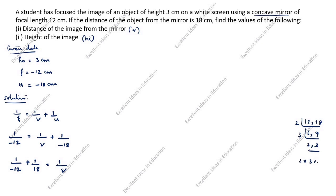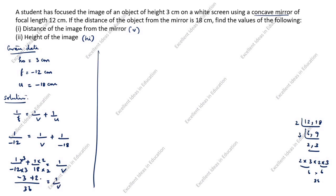Finding LCM of 12 and 18: the LCM is 36. So we get minus 3 over 36 plus 2 over 36, which equals 1 by v. Therefore minus 3 plus 2 is minus 1, giving minus 1 divided by 36 equals 1 by v. Since minus 3 is the larger value, the result is negative.